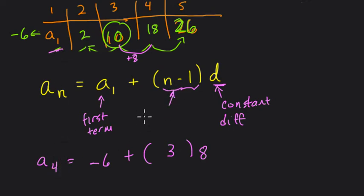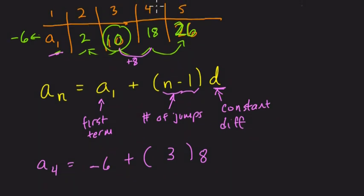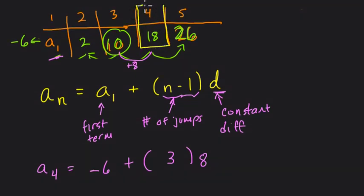I like to call this the number of jumps. Let me explain what that means. So here, if we're looking for the fourth term, that's right here. To get there, if we're starting at the first term, a sub 1, how many jumps do we need to reach the fourth term? We need 1 jump, 2 jumps, and then 3 jumps. The number of jumps it takes to reach the fourth term is 3.